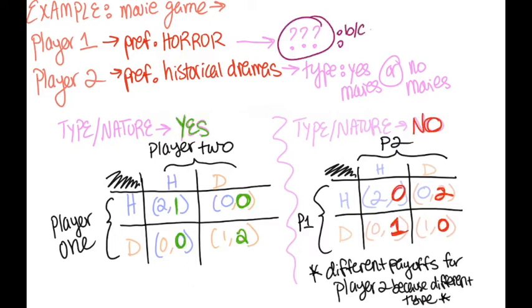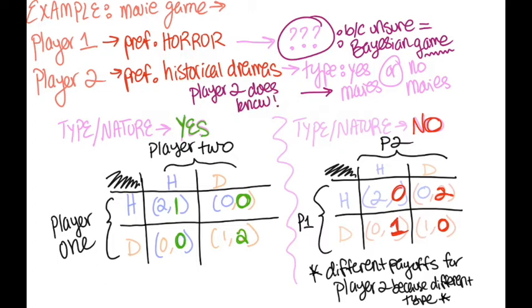Because player 1 is unsure of player 2's preferences, this is a Bayesian game, where player 1 is unsure of the payoff for player 2 and therefore does not know which version of the game they are playing. It's crucial to understand that player 2 does know which game it is, however, since their choices are the ones that determine the state of the game.